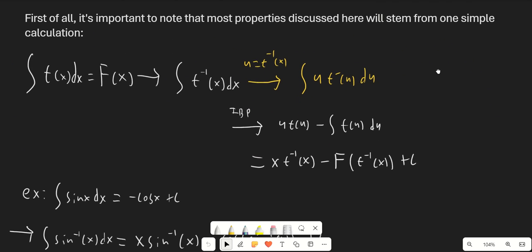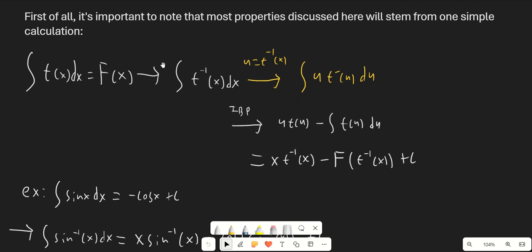So really the only thing you need to know from this video comes from this one formula, which is the calculation of the integral of the inverse function of f(x) dx. Essentially to do this, we set u equal to the inverse function of f(x), and then we integrate by parts. If the integral of f(x) dx is capital F(x), then our final answer is x times the inverse function of f(x) minus capital F of f inverse of x plus c.